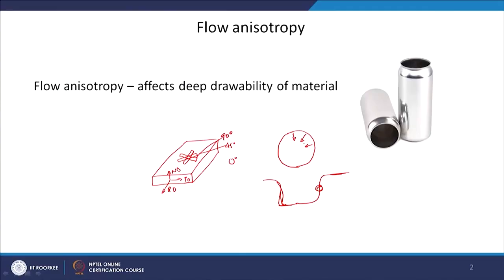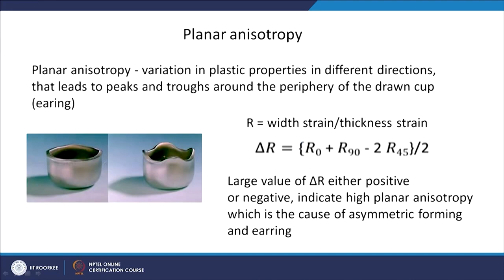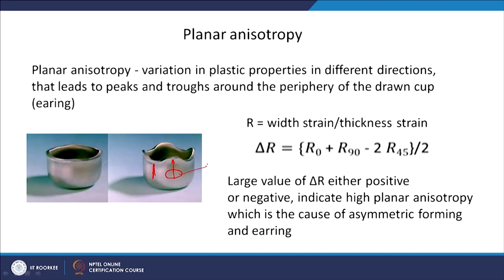If the deformation is not uniform throughout the sheet, this kind of anisotropy develops — what we call the earring phenomena. In one direction the material is not able to deform but in another direction it is able to deform, which is why you see the material got pulled by the punch. This anisotropy can be divided into two types: the first is called planar anisotropy, which is the cause of earring phenomena — simply that the property in different directions is different.